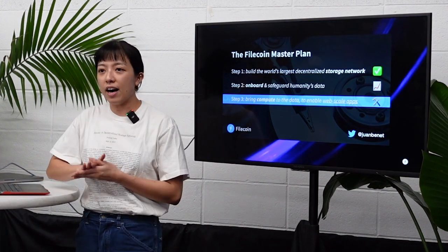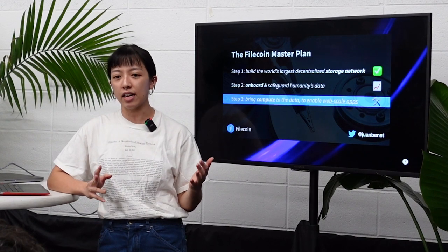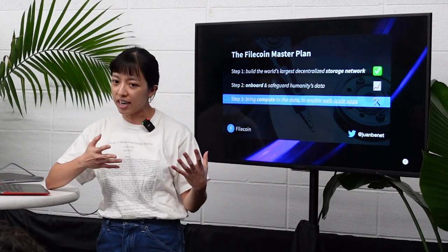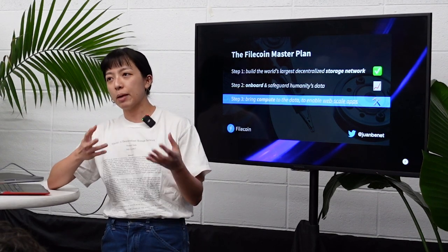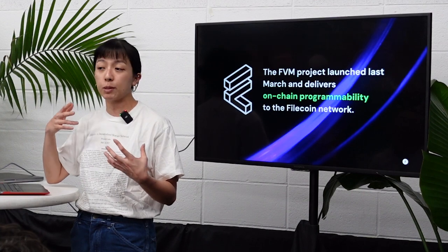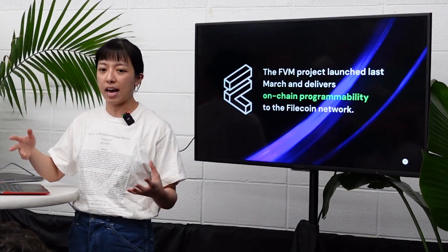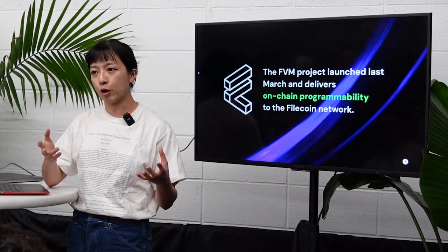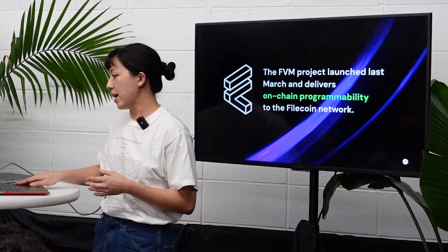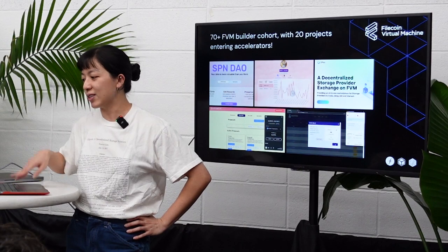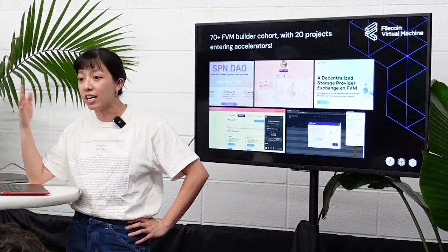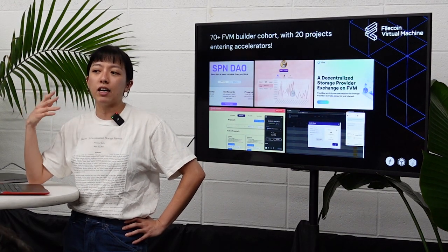The Filecoin master plan — I'm sure you all know this, but I want to set it as context because this is really where we started. We wanted to build the world's largest decentralized network, we've done that, we've been onboarding a ton of data. Then we wanted to enable compute, which we did with the FVM — the Filecoin Virtual Machine, launched last year. It delivered on-chain programmability to the Filecoin chain, meaning for the first time you could do user-defined smart contracts on Filecoin. We had about 70-plus projects that worked with us for about six months, and 20 of them made it into an accelerator.